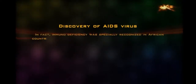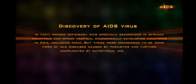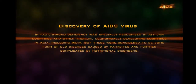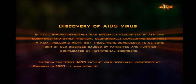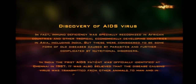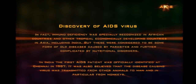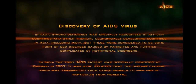Immunodeficiency was especially recognized in African countries and other tropical, economically developing countries in Asia, including India. But these were considered to be some form of old diseases caused by parasites and further complicated by nutritional disorders. In India, the first AIDS patient was officially identified at Chennai in 1987. It was also believed that the disease-causing virus was transmitted from other animals to man, and in particular from monkeys.